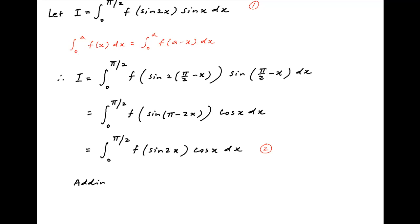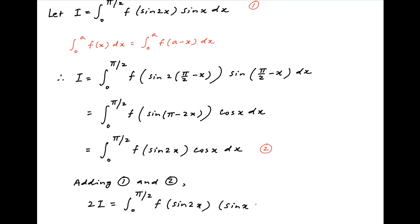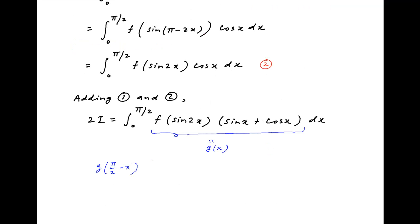Now adding results 1 and 2, we get on the left hand side 2I, and on the right hand side integral 0 to π/2 of f of sine 2x multiplied by (sine x plus cos x) dx. Now denote the integrand on the right hand side by g(x). Therefore, g of (π/2 minus x) equals f of sine of (2 times π/2 minus x) multiplied by (sine of π/2 minus x plus cos of π/2 minus x).